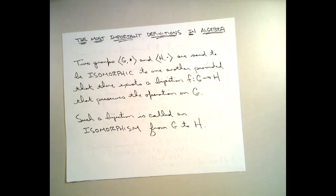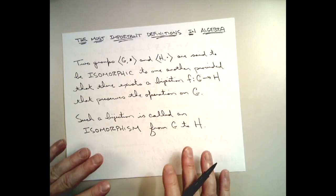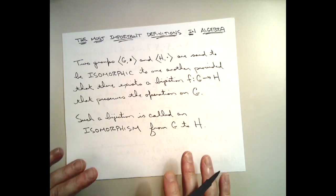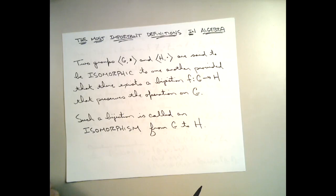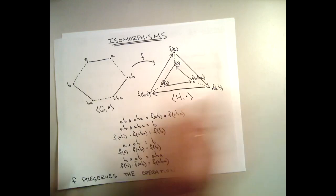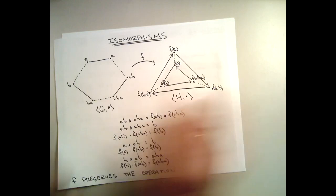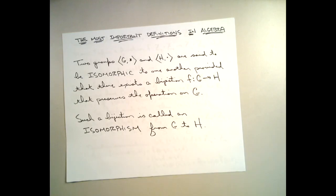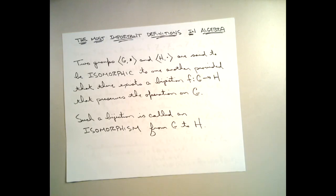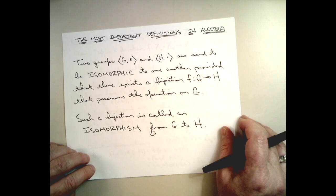I want to show you why this new way of defining the notion of two groups being isomorphic is in some sense better than the definition we were using before. The definition we were using before said that two groups are isomorphic provided that we can use the same Cayley graph to represent them both. This group is isomorphic to this group because I can use this Cayley graph to represent this group. It's a very intuitive way of thinking about two groups being isomorphic, but it's not a very efficient way whenever we're trying to prove that two groups are isomorphic.